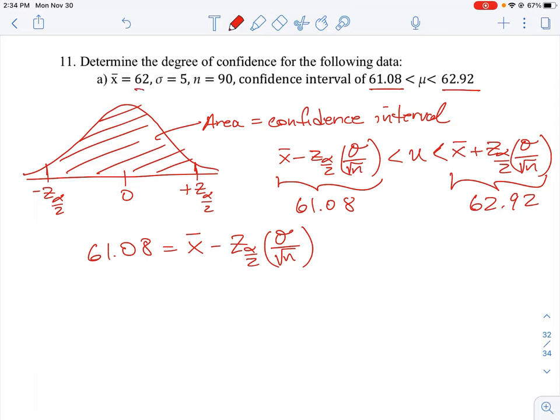So this gives us our following equation: 61.08 is equal to 62 minus z_α/2 times 5 all over root 90. Okay, and then if we work that through, we'll just have to convert out some of the decimals.